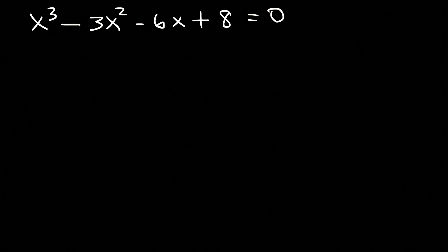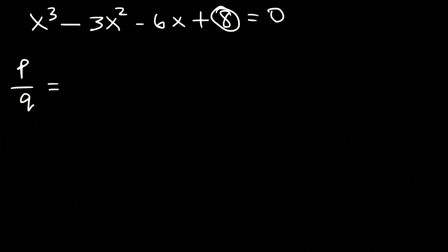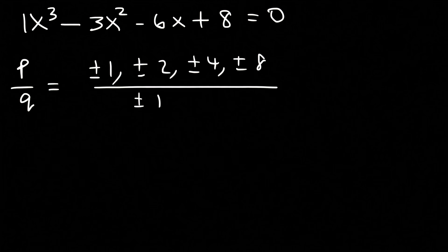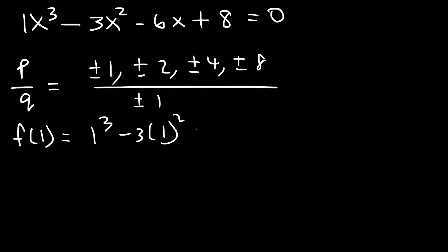The last method we can use is to list all the possible rational zeros using the rational zero theorem and then use synthetic division to find the other zeros. p represents the factors of the constant term 8, so the factors of 8 are 1, 2, 4, and 8. q represents the factors of 1, the leading coefficient. So let's evaluate the function at x equals 1 to see if that is a possible answer.